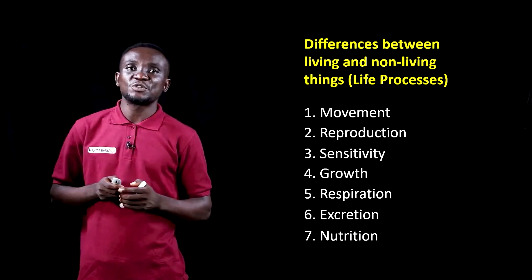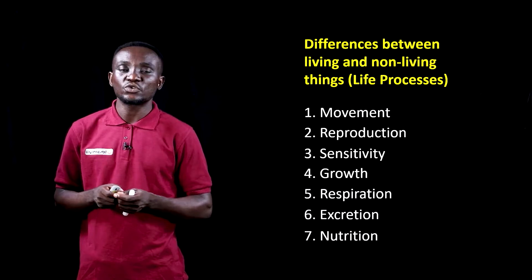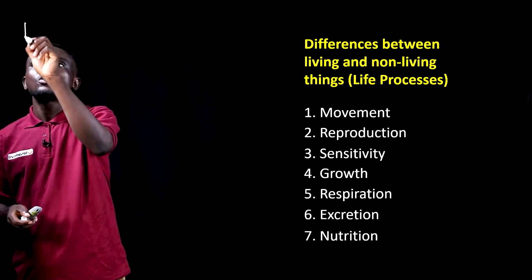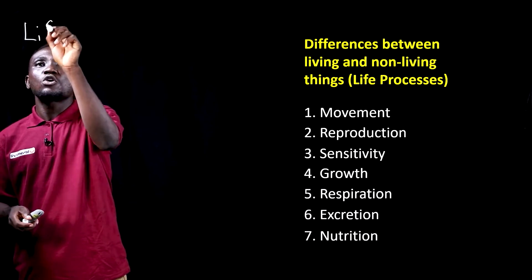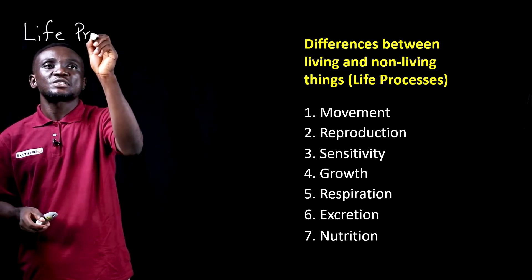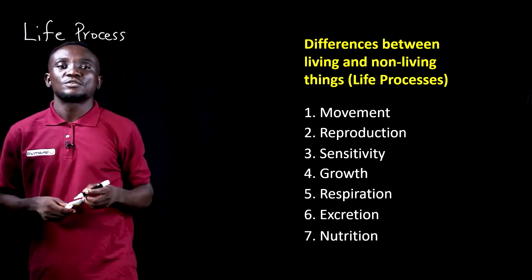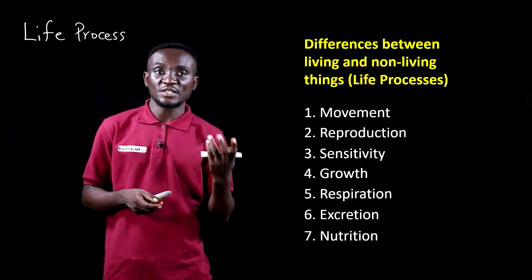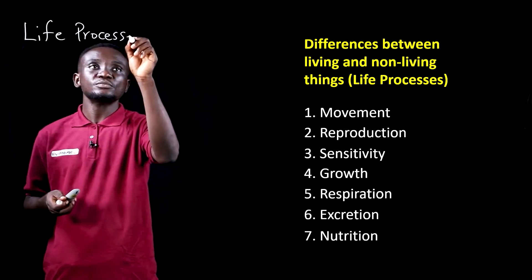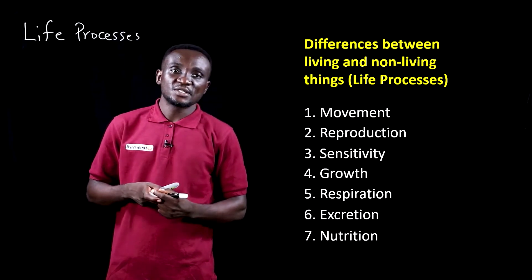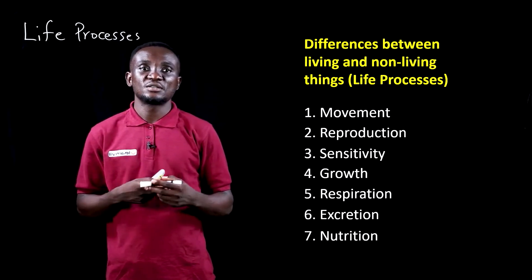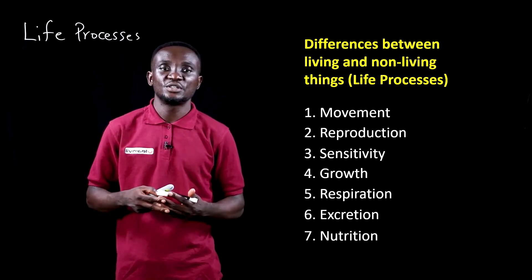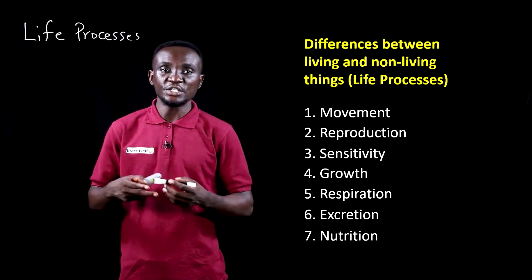Let's look at the main differences between living things and non-living things. In differentiating living things from non-living things, we use what we call the life processes. There are seven main life processes: movement, reproduction, sensitivity, growth, respiration, excretion, and nutrition.